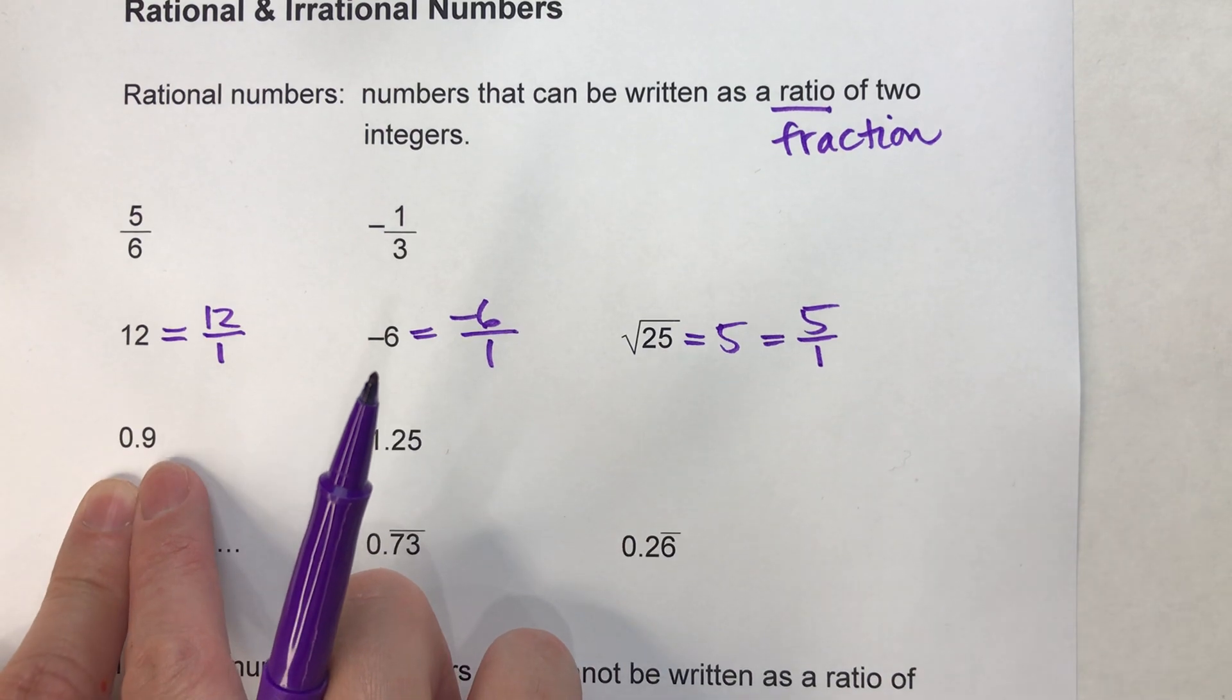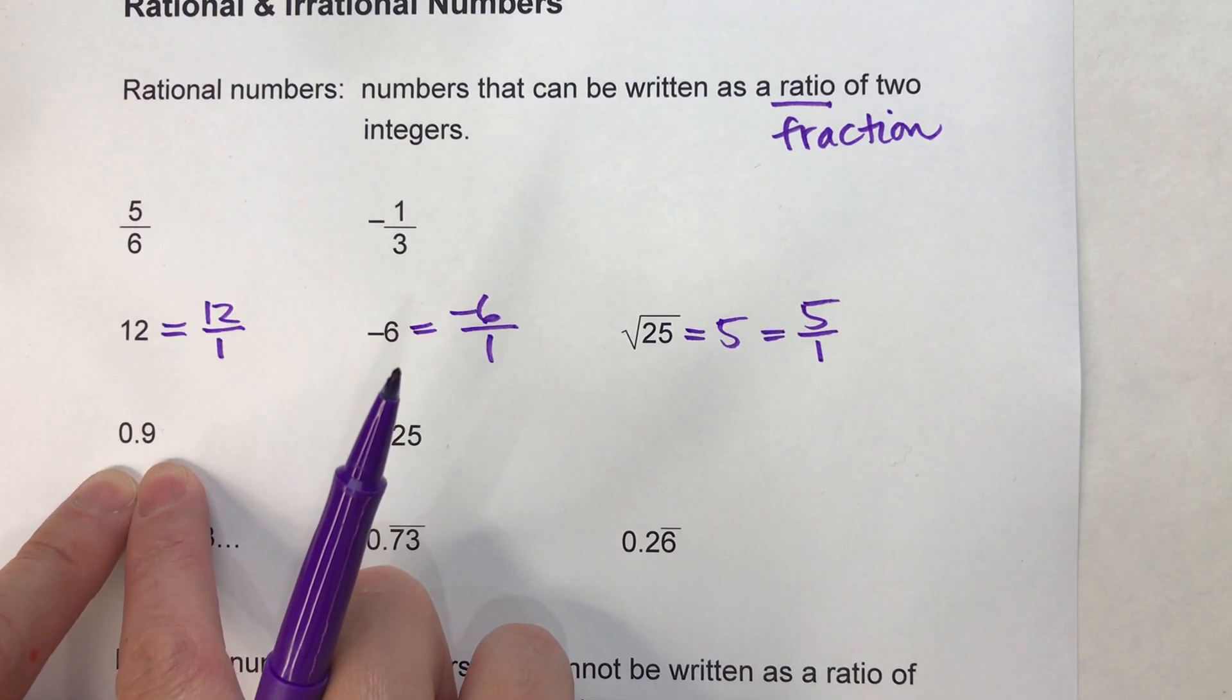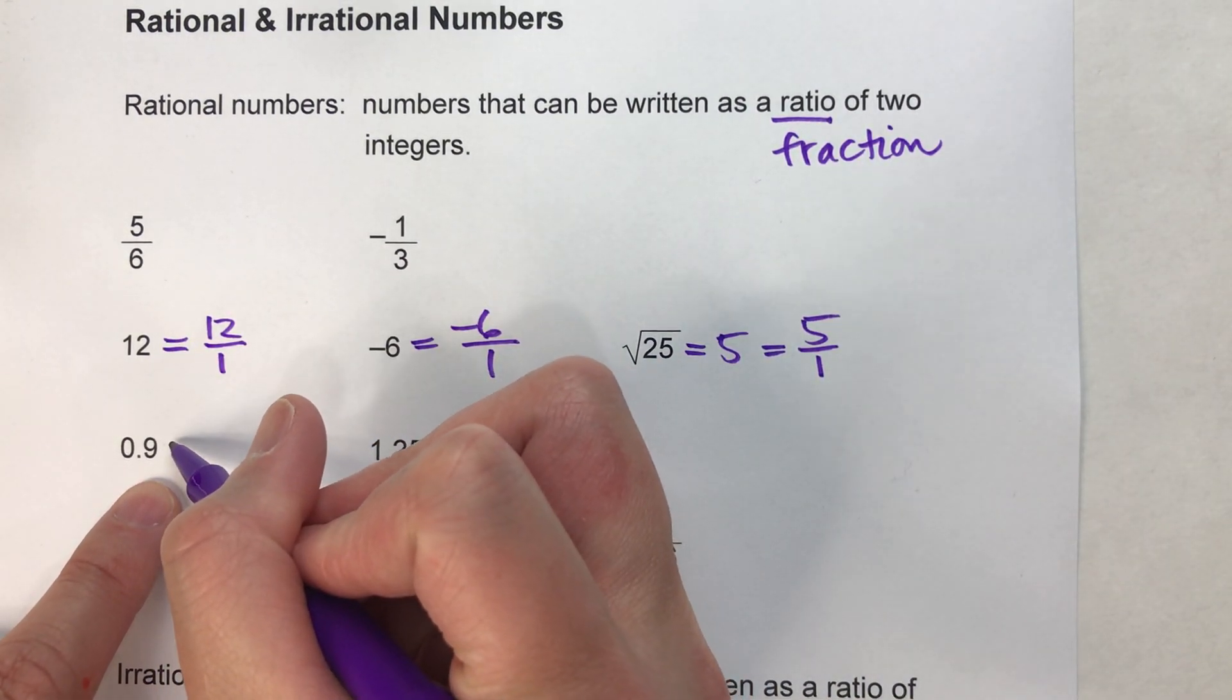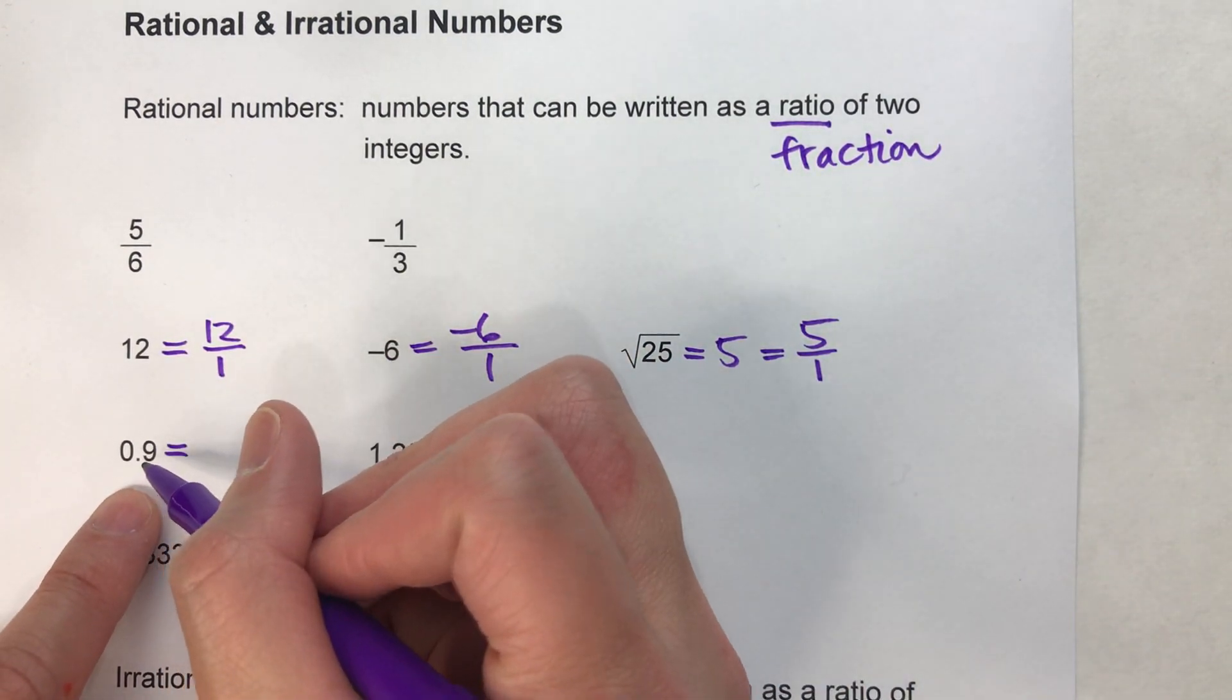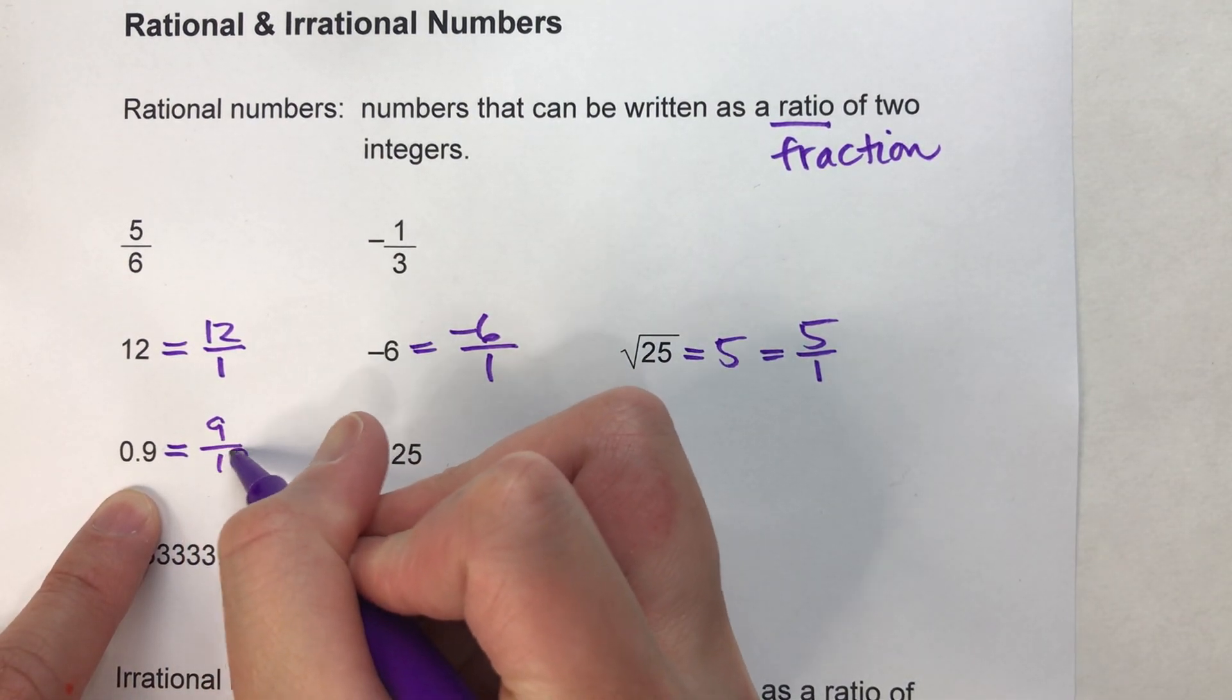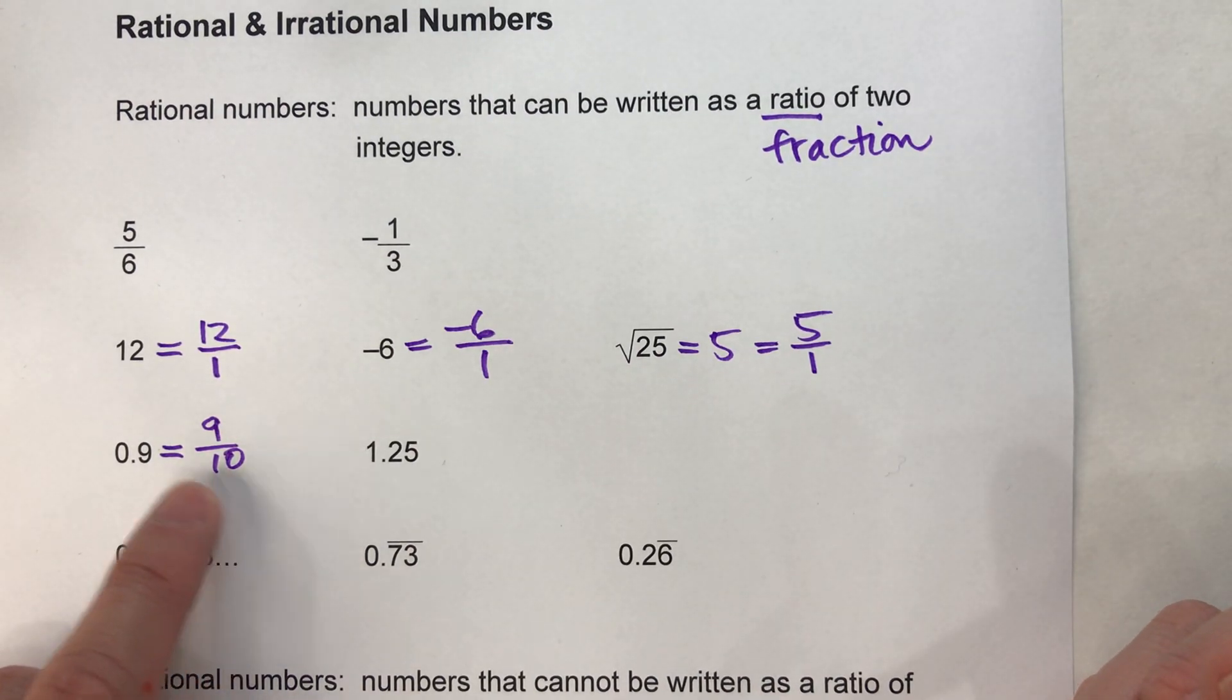All decimals that terminate, that end, are also rational. For example, 0.9. We say 0.9, but mathematically we're supposed to call it 9 tenths. The reason we call it 9 tenths is because now you know what fraction it is. 0.9 can be written as 9/10, so therefore it's rational.